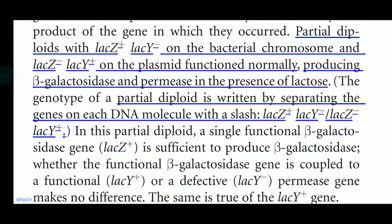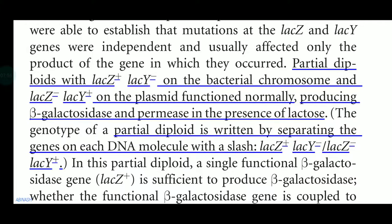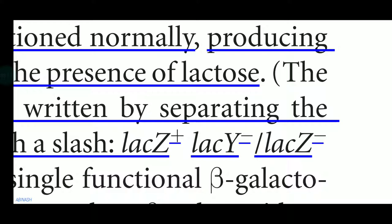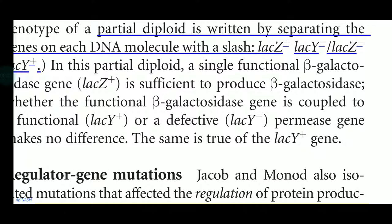The same genes are present in both the full bacterial chromosome and also in the plasmid. So if one gets mutated, the other will compensate for its absence. This is very important. The partial diploid is written by separating genes on each DNA molecule with a slash — for example, lac Z plus, lac Y minus / lac Z plus, lac Y plus.